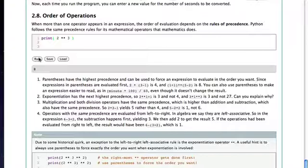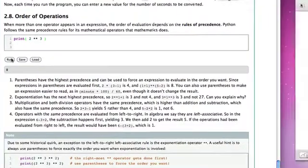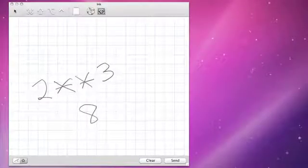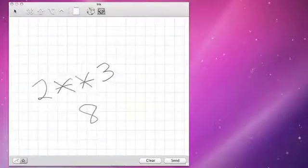Now what do you suppose is the precedence of the exponent operator with respect to the other two classes that we've seen already, multiplication and addition? The answer is that the exponent operator has the highest precedence, and so the order of operations is going to be like this.